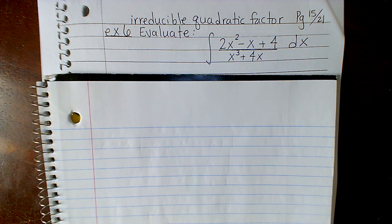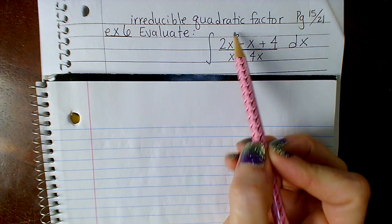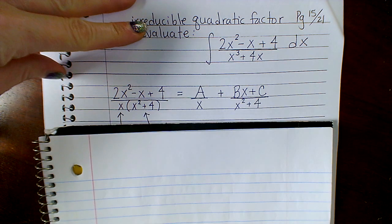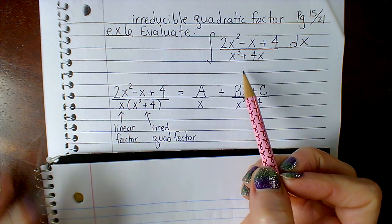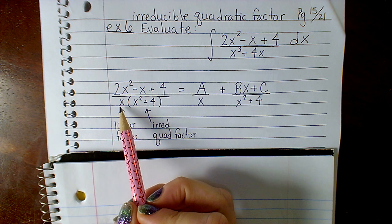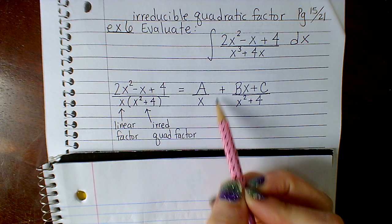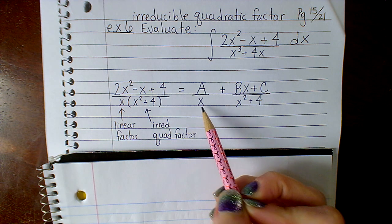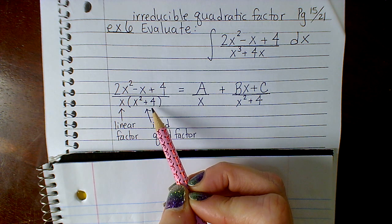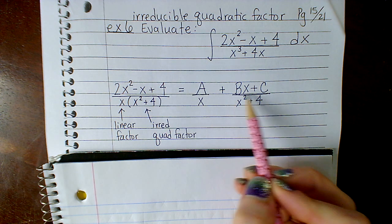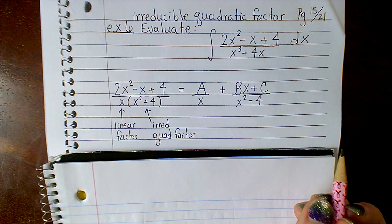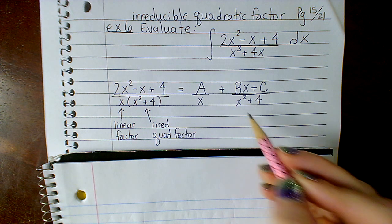Notice that prior to this, whenever we factored with linear or repeated linear factors, my numerator has always been a constant — a degree less than whatever my denominator degree is. So here, if my denominator has a degree of 2, my numerator needs to be linear, meaning a degree of 1. Let's look at one that has an irreducible quadratic factor in its denominator. Don't try to split these; leave this as one fraction.